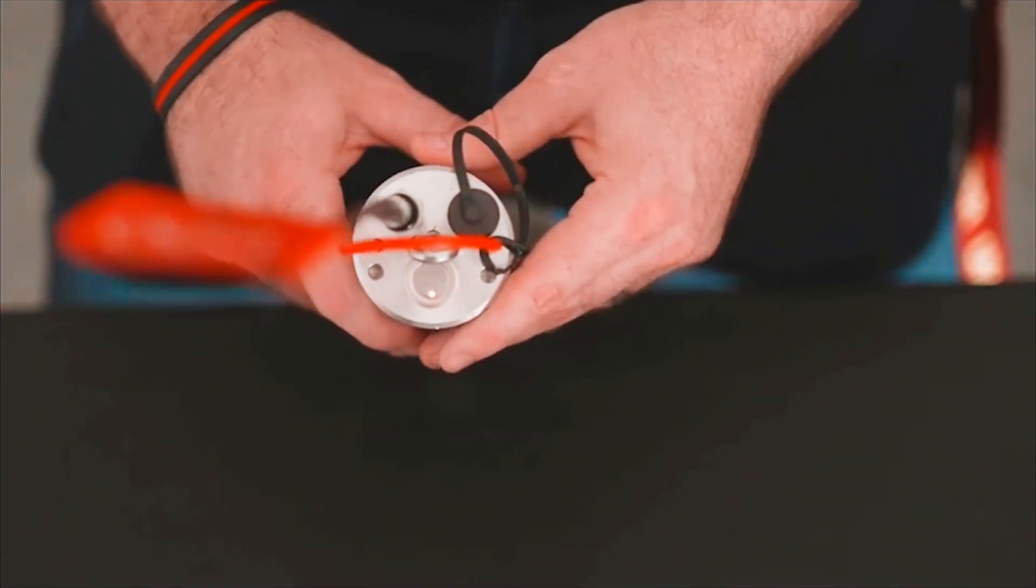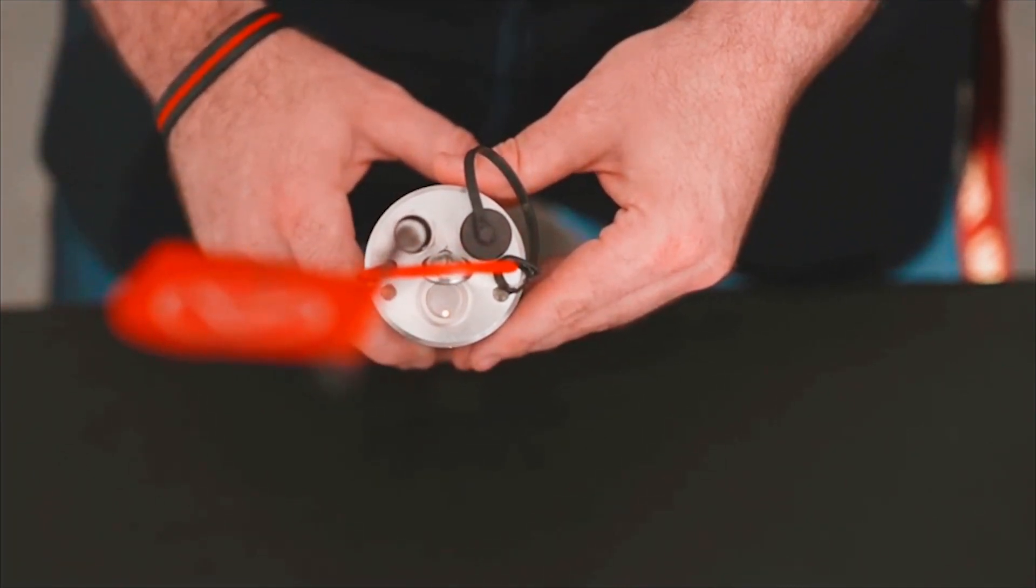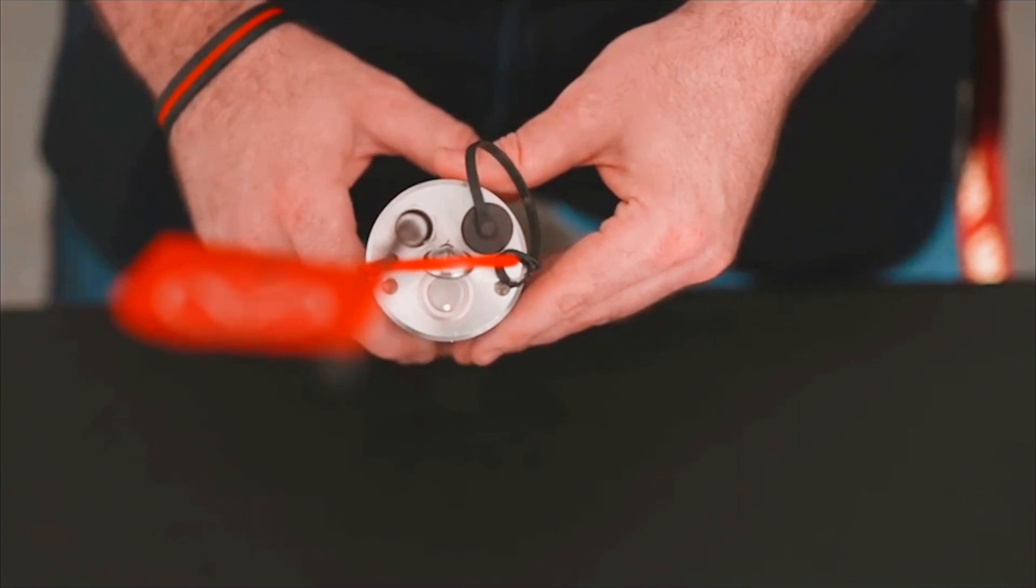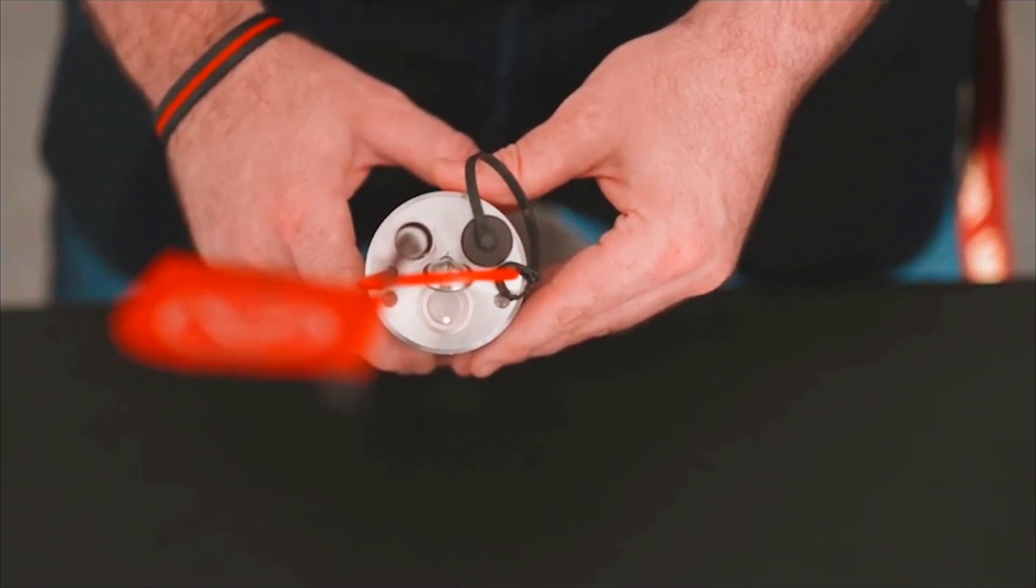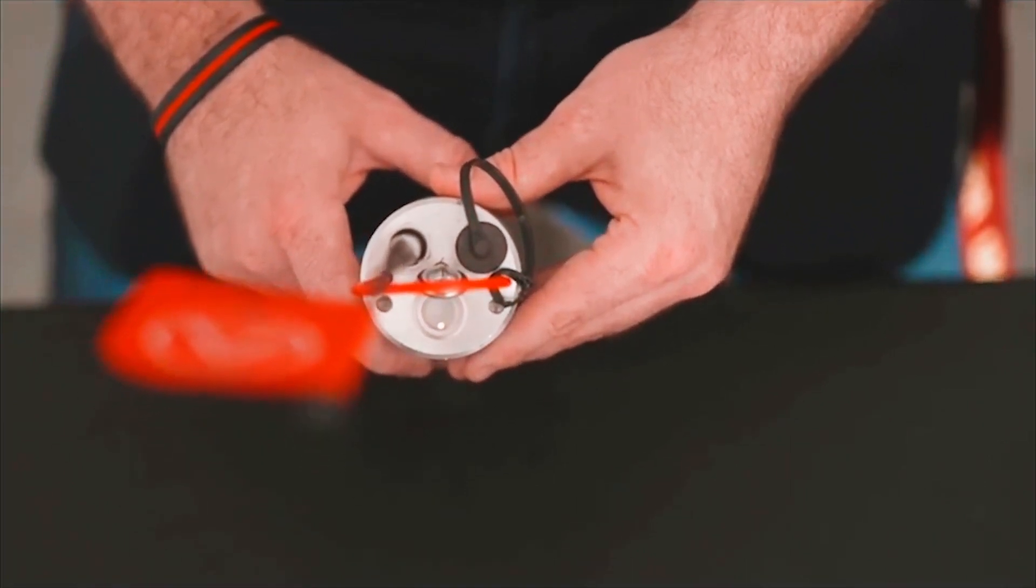The second setting is a blinking red light and this setting is for doing leak detection on all plastic material pipes. This setting is achieved by pressing the steady red button again for a second or two. This will change the steady red light to a blinking red light.